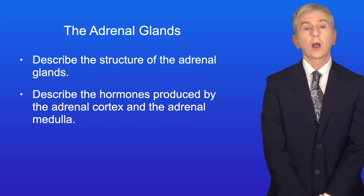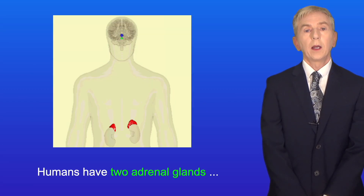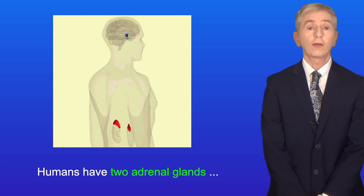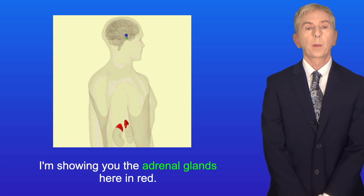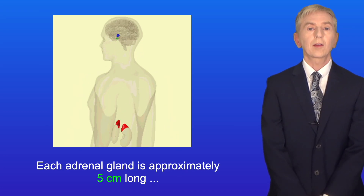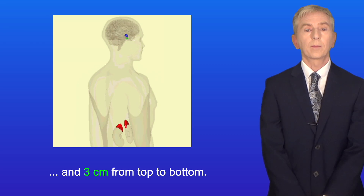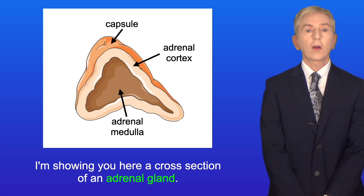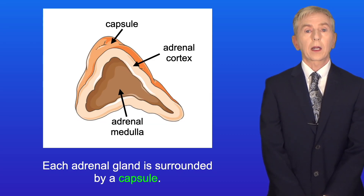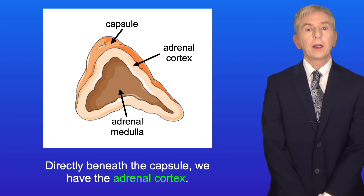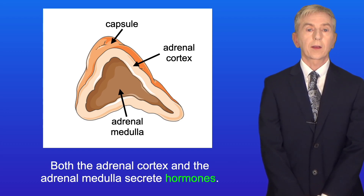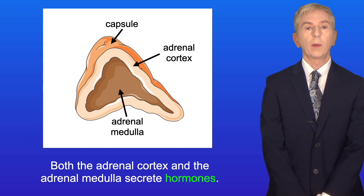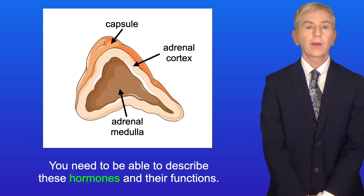There is a lot of detail in this video and it's important that you learn it. Humans have two adrenal glands, one above each kidney, and I'm showing you the adrenal glands here in red. Each adrenal gland is approximately five centimeters long and three centimeters from top to bottom. I'm showing here a cross section of an adrenal gland. Each adrenal gland is surrounded by a capsule. Directly beneath the capsule we have the adrenal cortex, and in the center we have the adrenal medulla. Both the adrenal cortex and the adrenal medulla secrete hormones and you need to be able to describe these hormones and their functions.